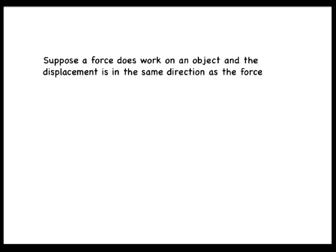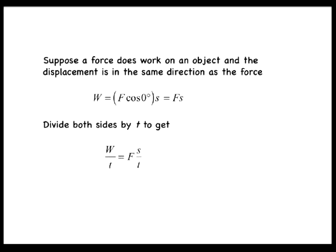Suppose a force does work on an object and the displacement is in the same direction as the force. Then w equals f times cosine of 0 degrees times s, which equals f times s. If we now divide both sides by the time, the left side is the average power, and s divided by t is the average speed. So the average power is equal to the force multiplied by the average speed.